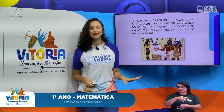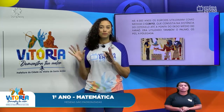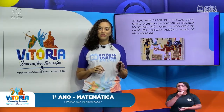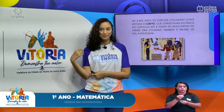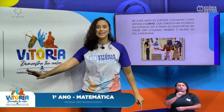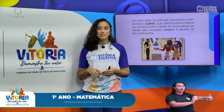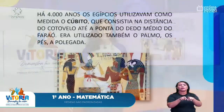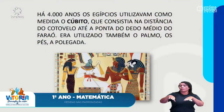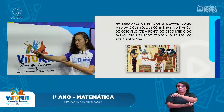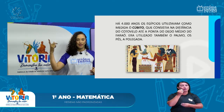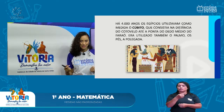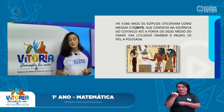Há 4 mil anos, os egípcios utilizavam como medida o cúbito, que consistia na distância do cotovelo até a ponta do dedo médio do faraó. E era utilizado também palmos, pés e a polegada. O cúbito vai do cotovelo esticado até a pontinha do dedo médio. Mas isso era lá no Egito, há 4 mil anos atrás.